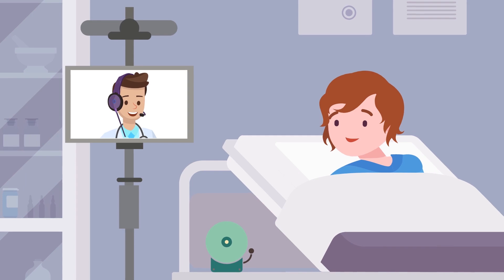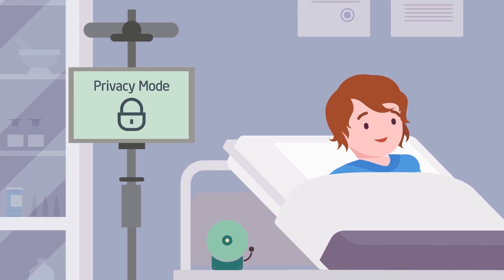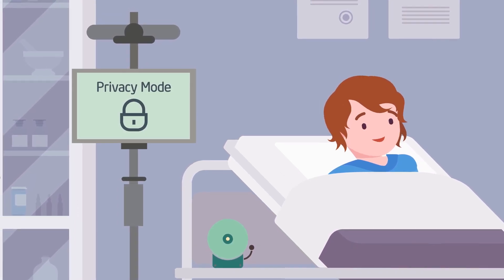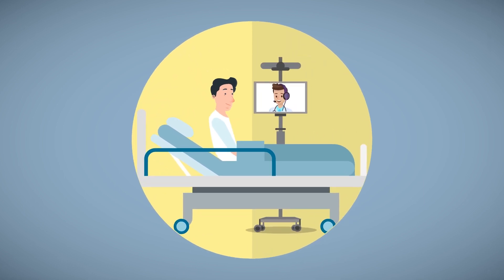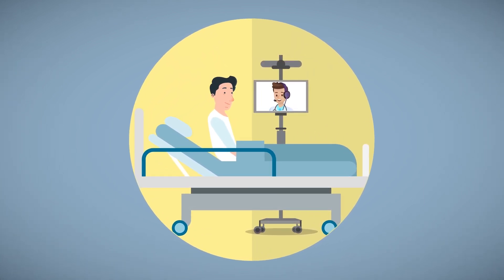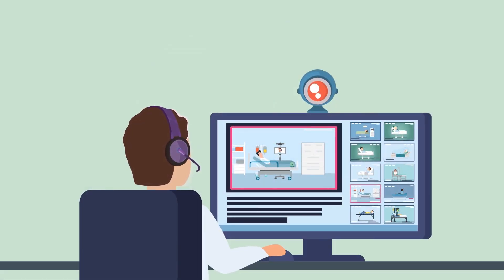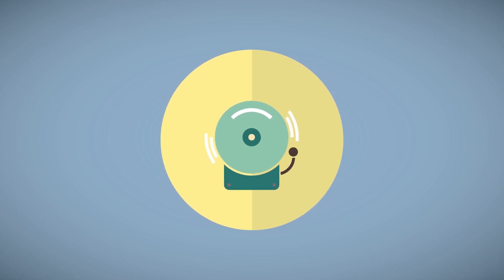Patients can see and talk with the sitter at any time. Privacy mode is available when observation is not needed. When a patient shows signs of agitation or is getting up out of bed, the sitter can speak to the patient directly while simultaneously alerting a nurse. If the sitter is unable to redirect the patient, a STAT alarm can be activated.